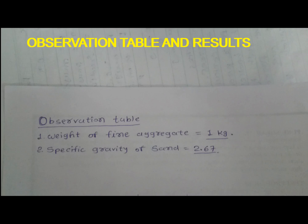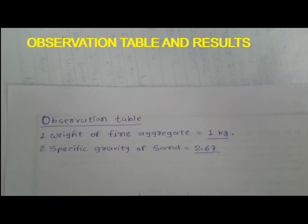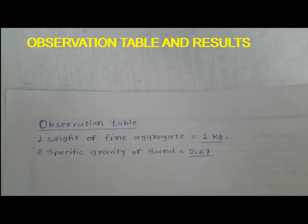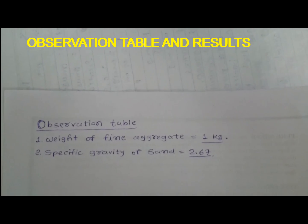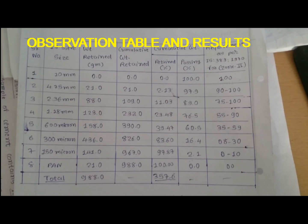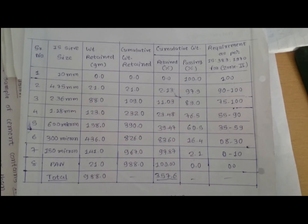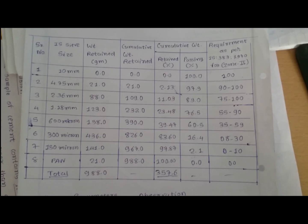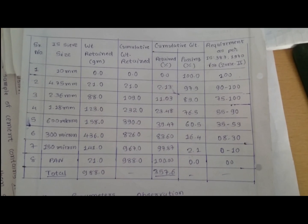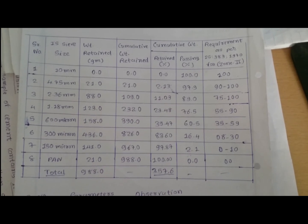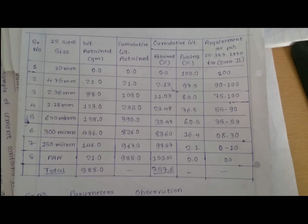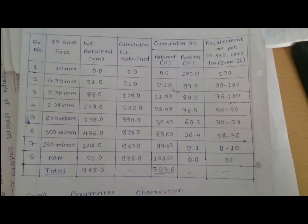Now we are going for the observation table and result. The weight of the fine aggregate is equal to 1 kg and specific gravity of sand is equal to 2.67. The weight retained on various sieves: 10 mm — 0 g, 4.75 mm — 21 g, 2.36 mm — 88 g, 1.18 mm — 123 g, 600 micron — 158 g, 300 micron — 436 g, 150 micron — 141 g, pan — 21 g; total 988 g.